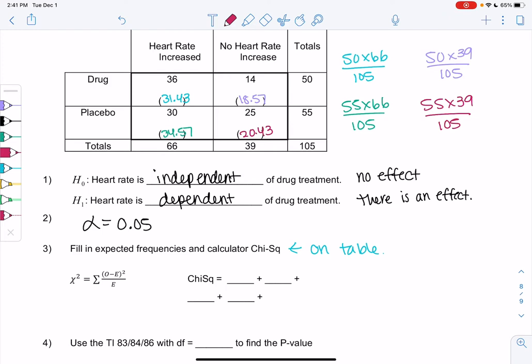So these are the numbers that if heart rate isn't a side effect, these are the numbers we should have gotten. Because some people, their heart rate's just going to go up no matter what. But it should be about the same for the placebo in the drug group.